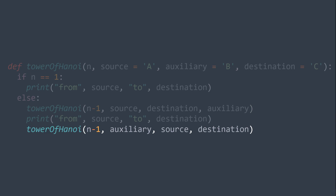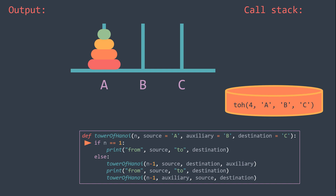Not convinced yet? Let's call this function with N equal to 4. You have the pegs, the output, the code, and the call stack to visualize what's happening.